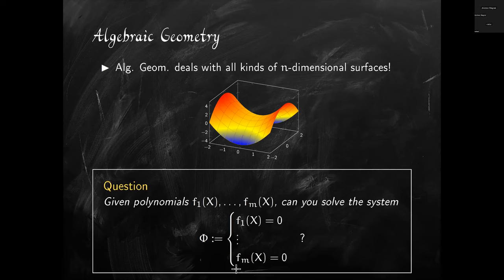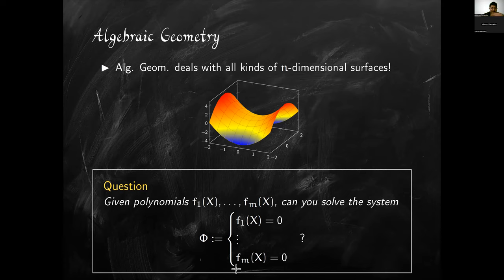In summary, here is the central motivating problem of algebraic geometry: you are given a set of polynomials f1 through fm, and you want to find the points at which all of these polynomials simultaneously evaluate to zero. The examples we did contained only one polynomial. In more general situations you'll have multiple polynomials, and you'll want to study their common zero set — which is just the intersection of the individual zero sets.